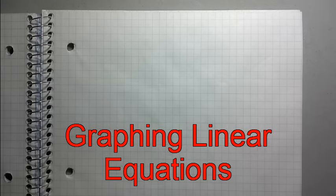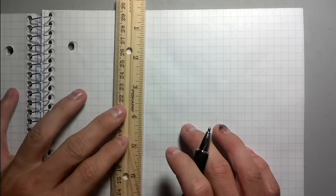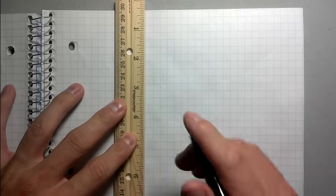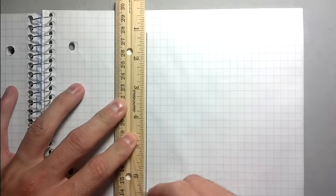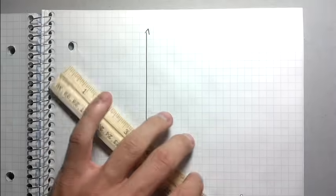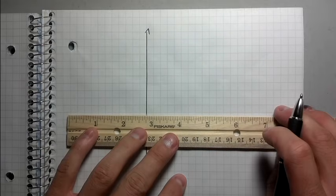Alright, so this video is about graphing linear equations — it's about graphing lines. I'm going to give some examples here and try to explain the steps. First thing we need to graph the lines, we need to graph the Cartesian plane. The Cartesian plane, the xy-plane, is just a system of coordinates that we're going to use.